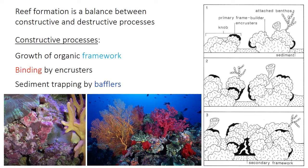The formation of a reef is a balance between constructive processes — producing or trapping sediment to build the reef structure above the seafloor — and destructive processes, which break the reef apart and convert it back into sediment. The main constructive process in a true reef is the growth of an organic framework built from the skeletons of organisms like corals or sponges. Binding of sediment and the framework itself by encrusting organisms, and the trapping or baffling of sediment by platy or fan-shaped organisms, can also be important.